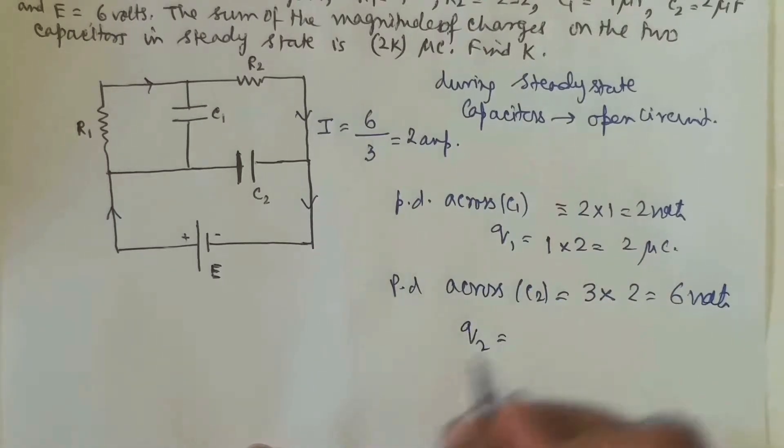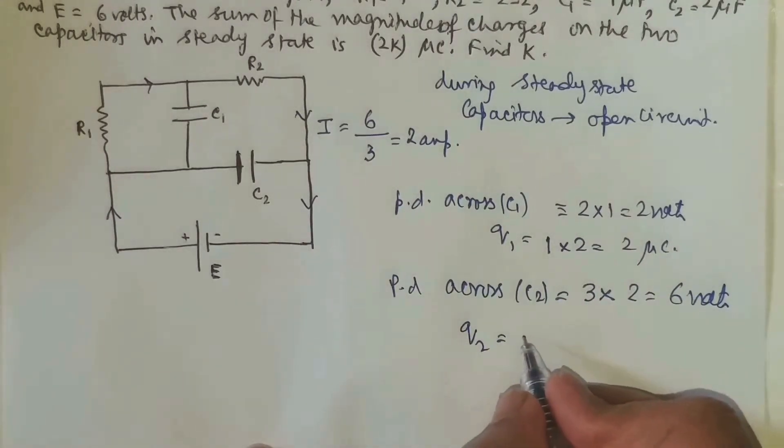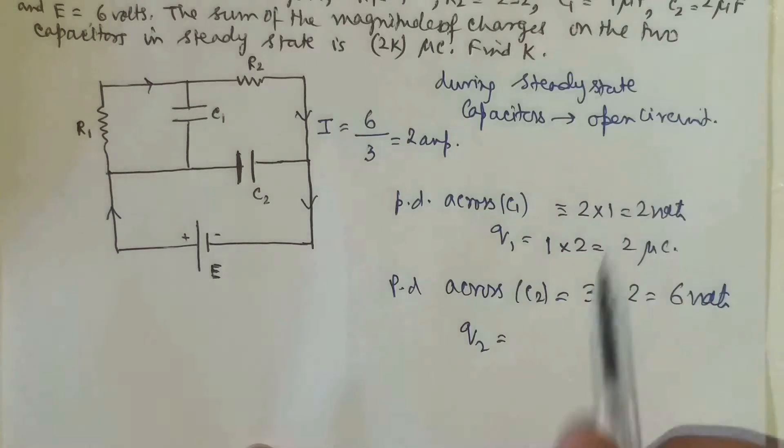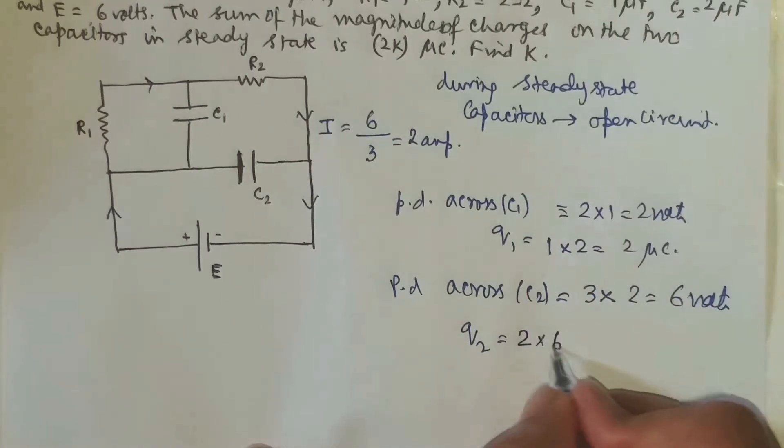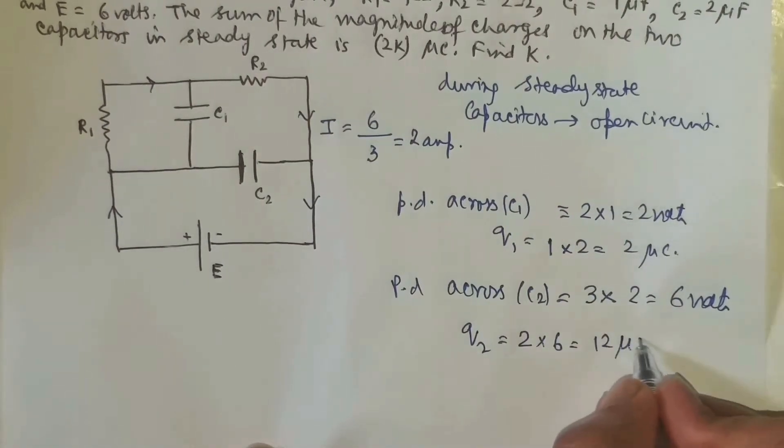So what is Q2? Q2 will be equal to CV. What is C? C they have given as 2. So 2 into 6, that is 12 micro coulomb.